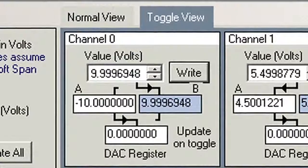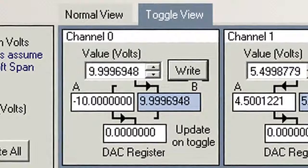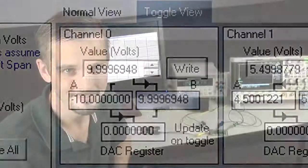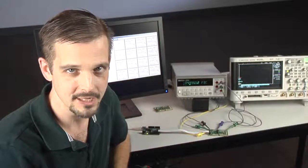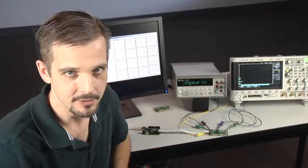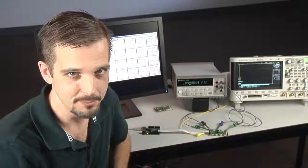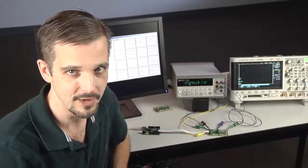The toggle view allows the A and B registers for each DAC to be loaded. Toggling is particularly useful for transducers that require AC excitation often with minimal DC content. I've set the output of channel 0 to the 10V bipolar range with the A and B registers loaded with 5V and minus 5V.